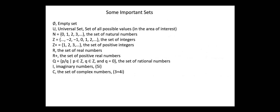Next, some important sets. Phi denotes the empty set. U denotes the universal set — the set of all possible values in the area of interest, for example the set of animals on the earth. N is the set of natural numbers: {0, 1, 2, 3, ...}. Sometimes we use N0 and N1; in the first case 0 is included, but in the second case 0 is not included in the set of natural numbers.